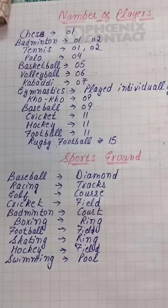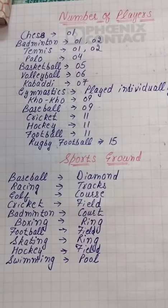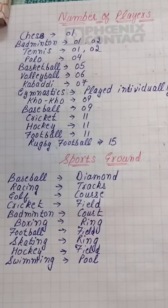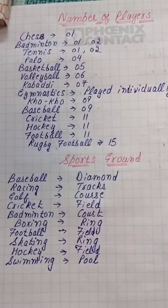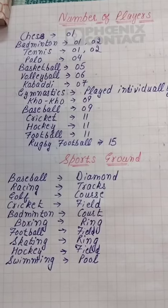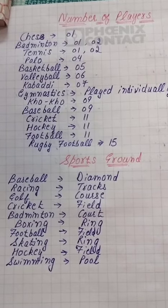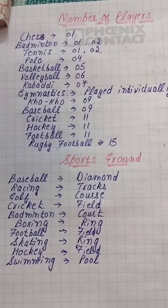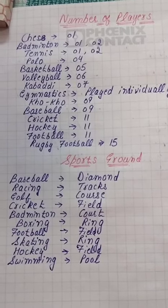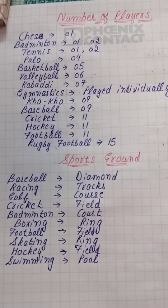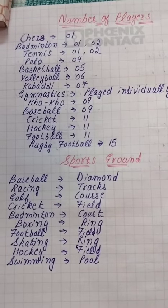Badminton is played on a court. Boxing is played in a ring. Football is played on a field. Skating is done in a ring. Hockey is played on a field. Swimming is done in a pool.